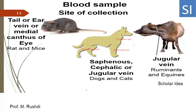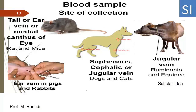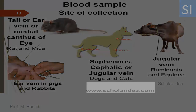In cases of rats and mice, the blood sample is collected from the tail or ear vein, or from the medial canthus of the eye. In cases of rabbits and pigs, the blood sample is collected from the ear vein.